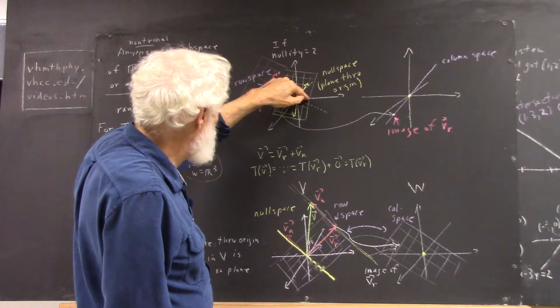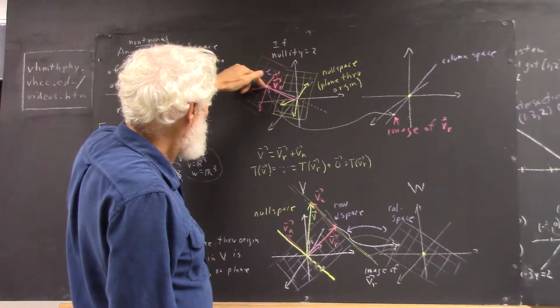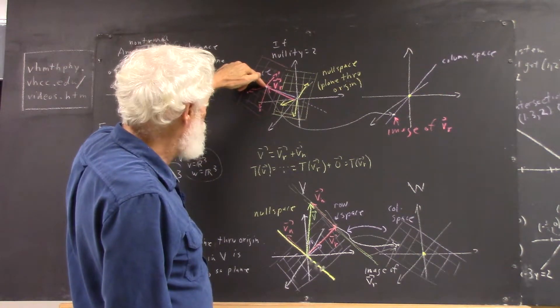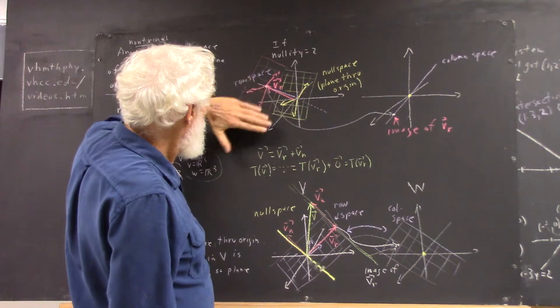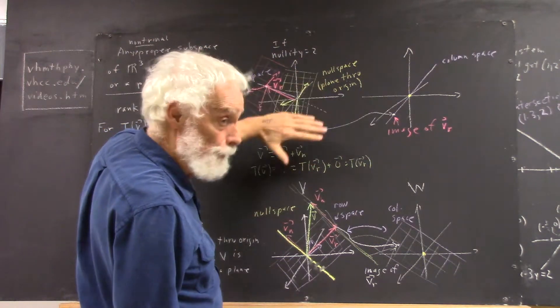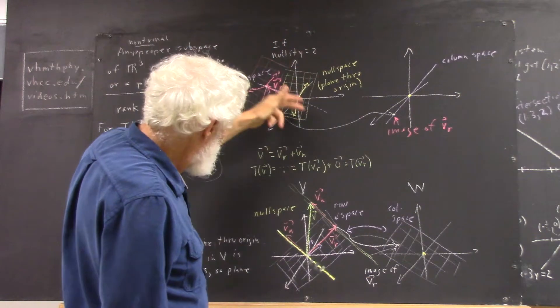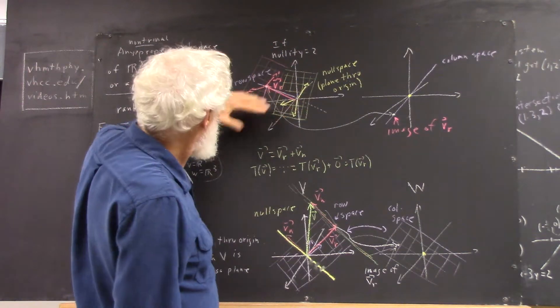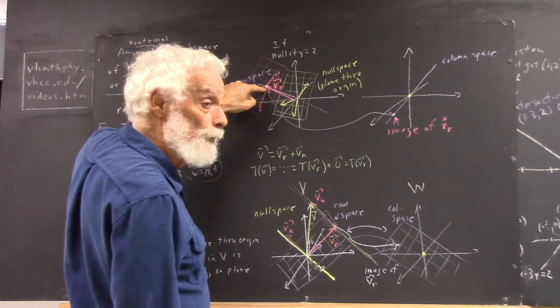So I take any of these null space vectors and bring it up here, tack it on head to tail with Vr, I get a point in a plane that's parallel to the plane of the null space. But the plane of the null space passes through the origin. The plane of this space passes through the Vr point.